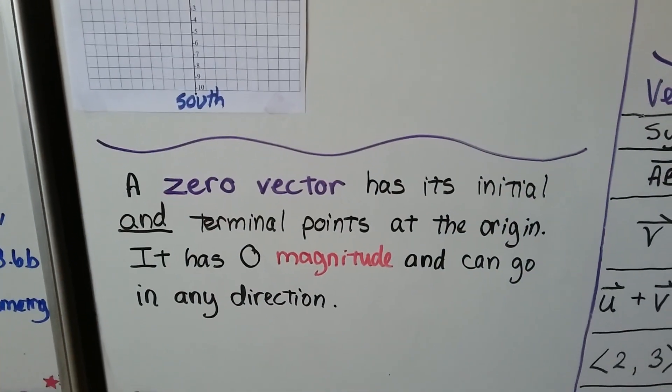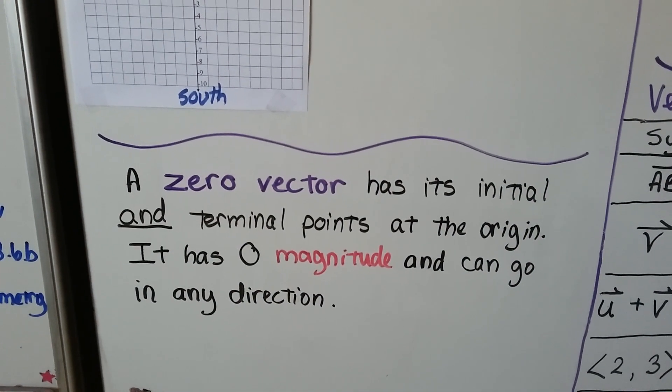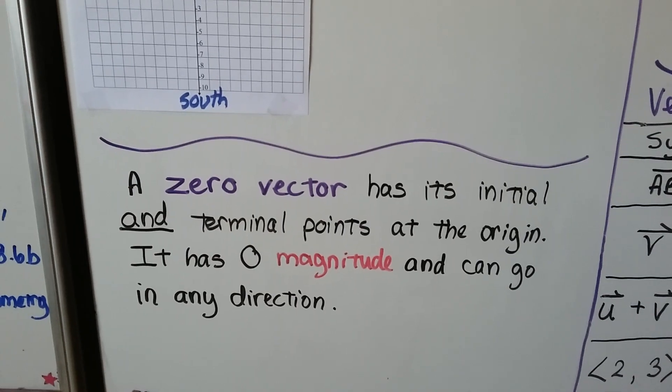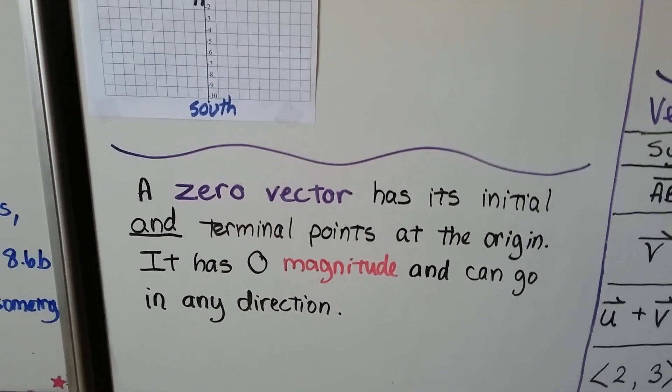And a zero vector has its initial and terminal points at the origin. It has zero magnitude and can go in any direction.